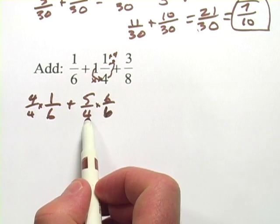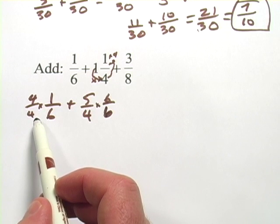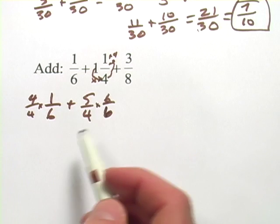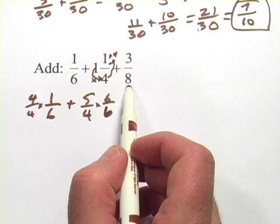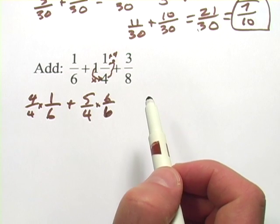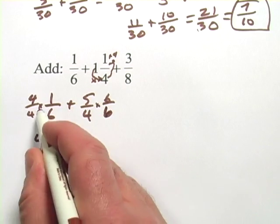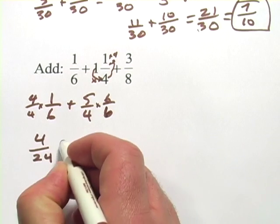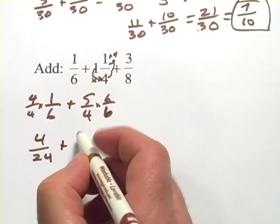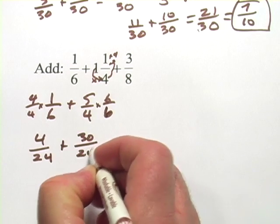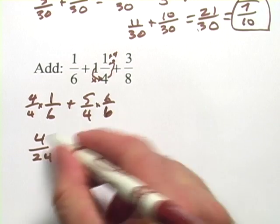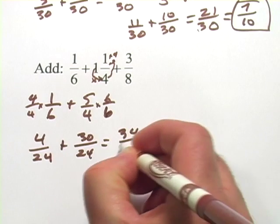But I decided to just do it this way because it's easy enough. And I think I'm going to have to go to 24 for that last one anyway. I was kind of looking ahead. Let's do the multiplication. 4 times 1 is 4, over 4 times 6 is 24. And 5 times 6 is 30 over 24. So we have 4 plus 30, 34 24ths.